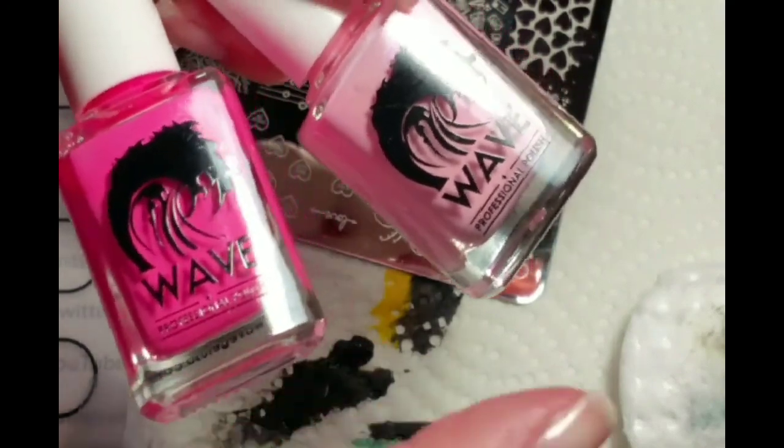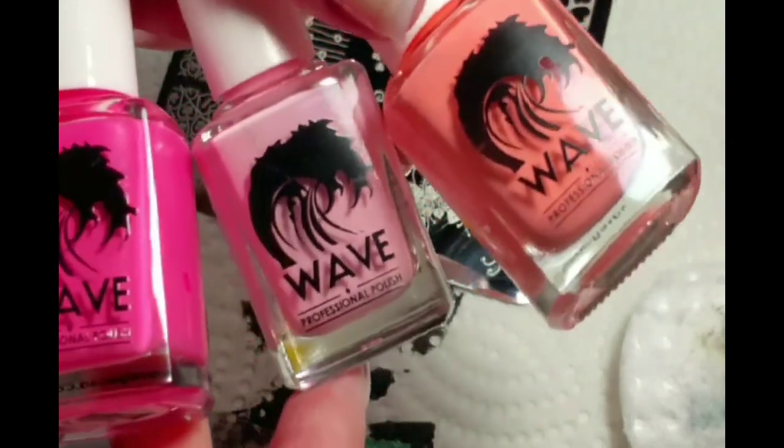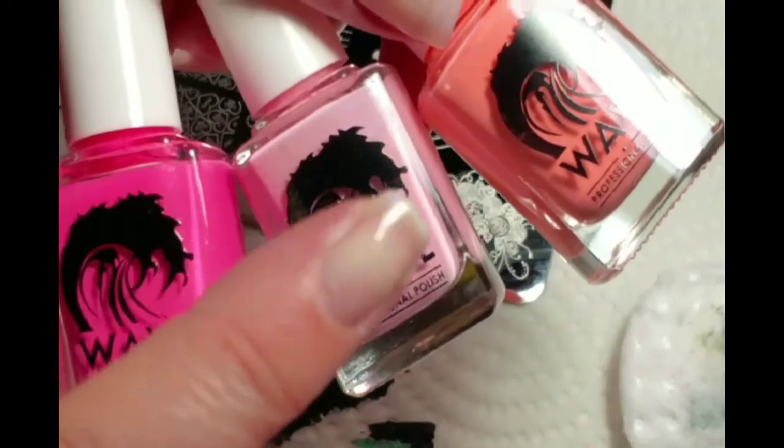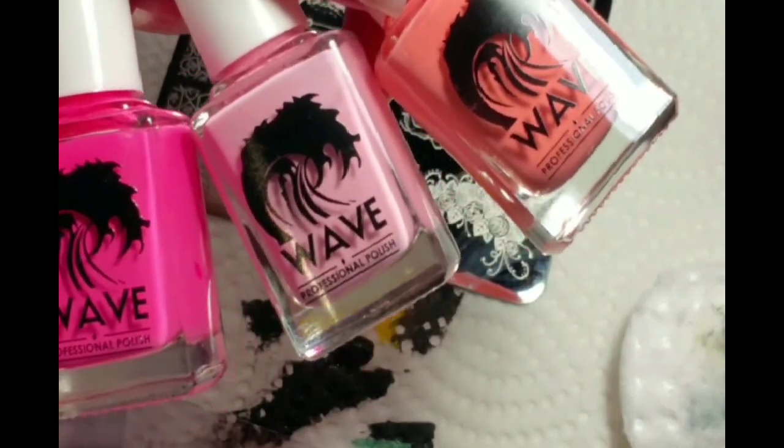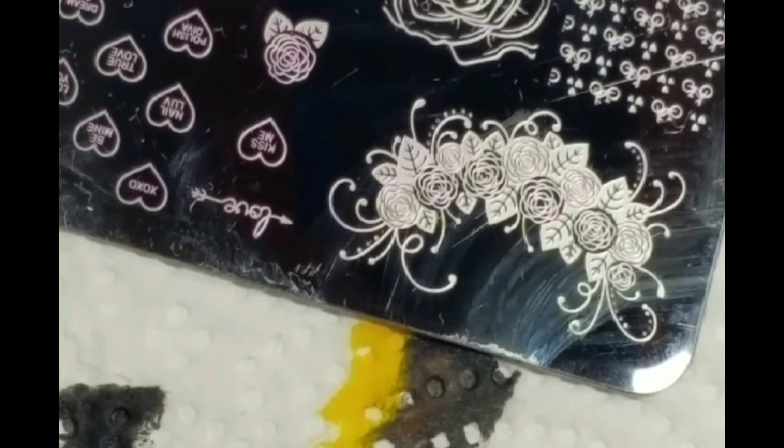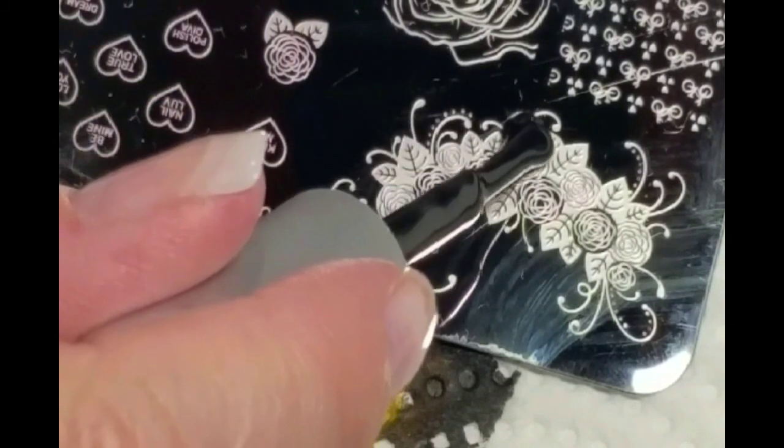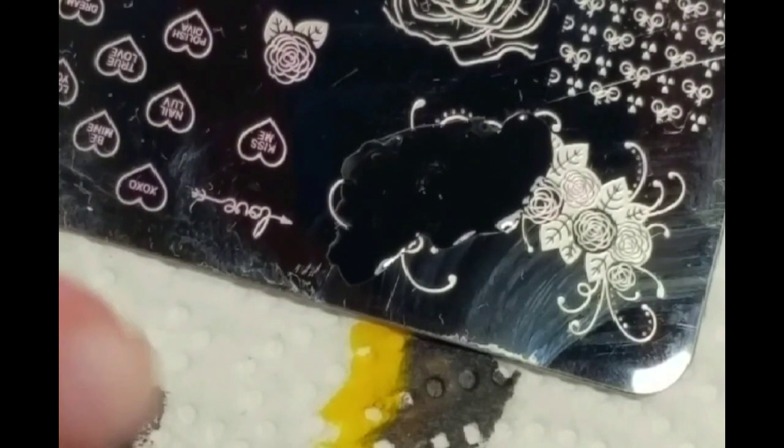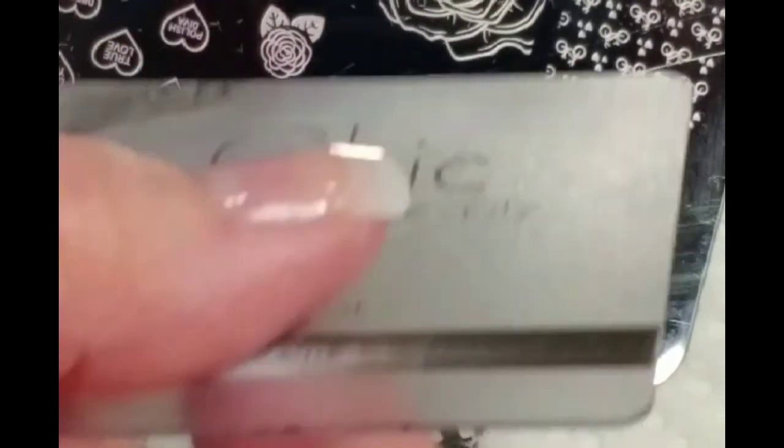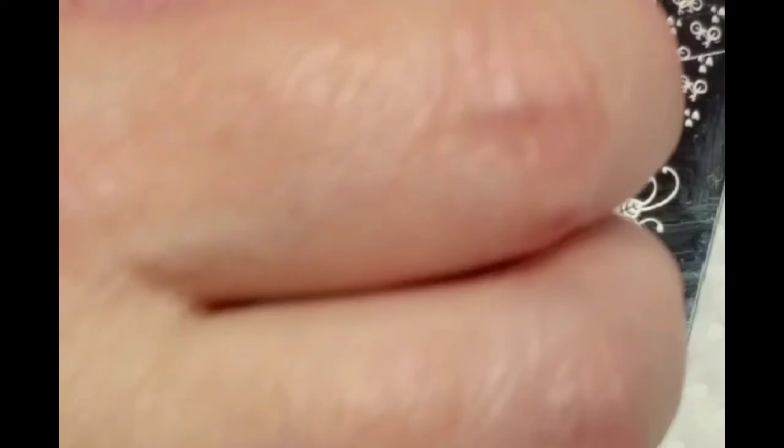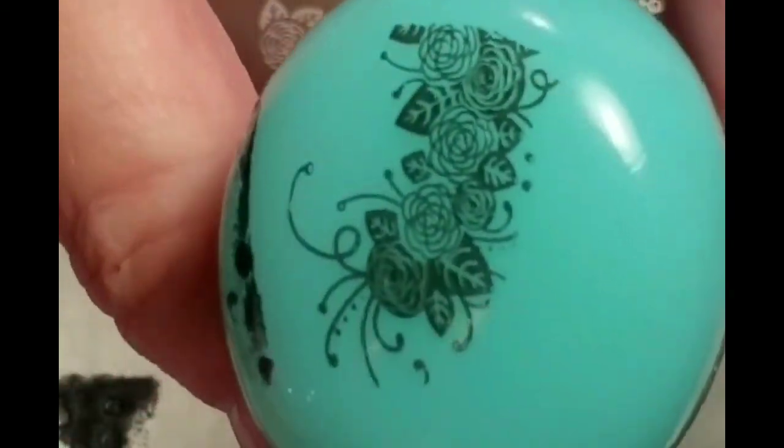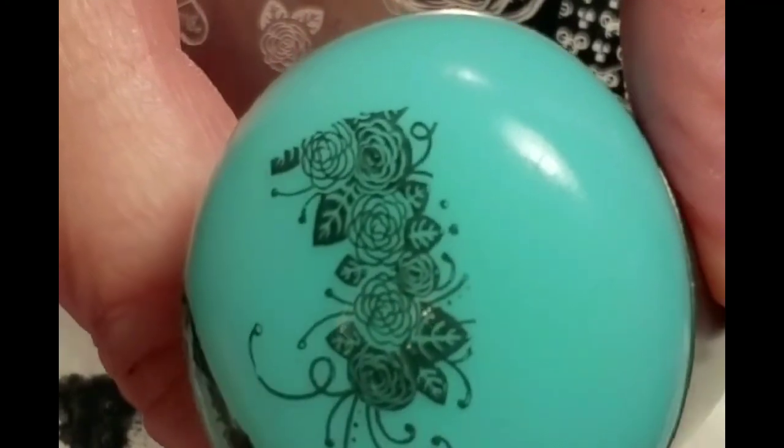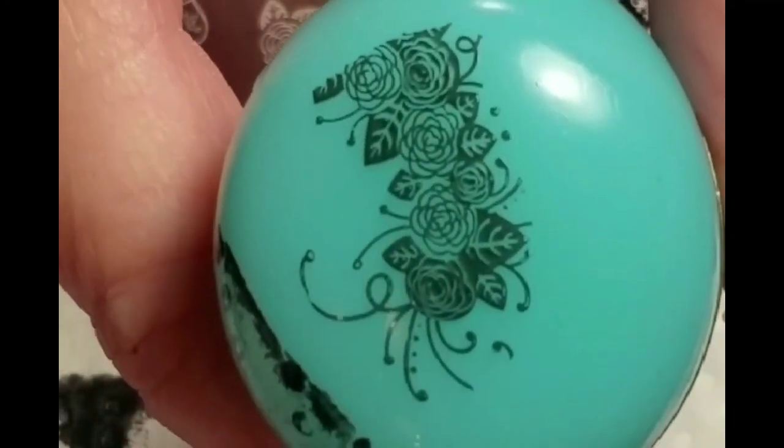And I'm going to use mulberry and strawberry shortcake. So these are the three colors I'm going to choose for all of the flowers. Okay. So I'm going to remove the leaves and get started on coloring in the flowers.